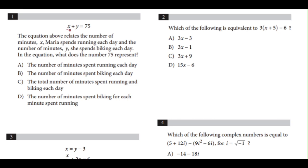Since we have x, which is the number of minutes she spends running, plus y, the number of minutes she spends biking, this will be the total amount of time that she spends doing both.